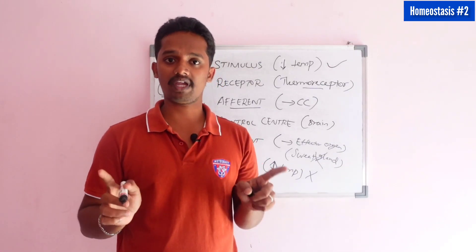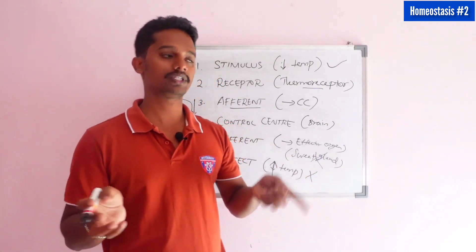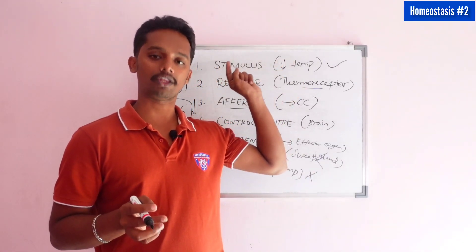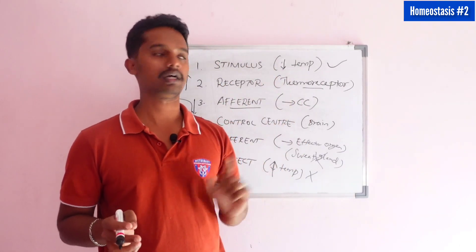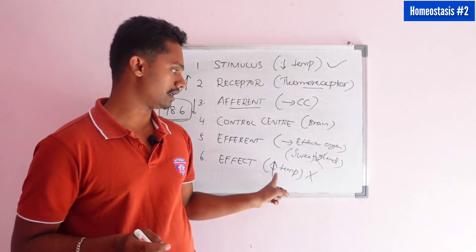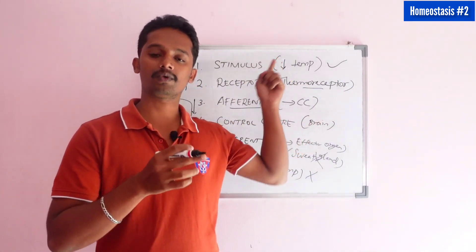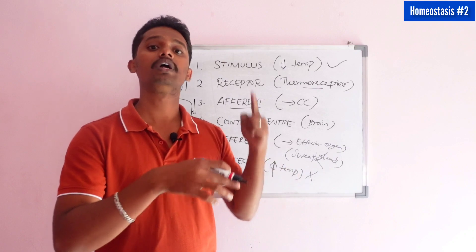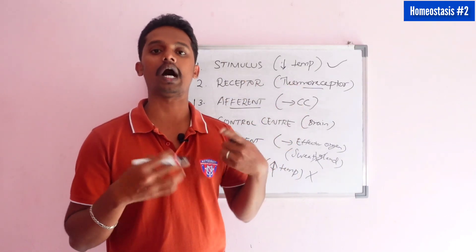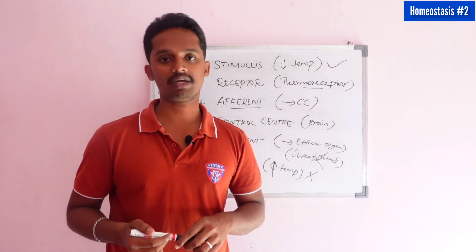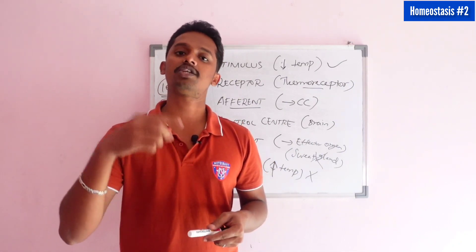It is like a two-way response in the body. If you are increasing, the body decreases; if you are decreasing, the body increases. In negative feedback, the first step (stimulus) and the sixth step (response) are opposite to each other. That is why it is called the negative feedback mechanism.